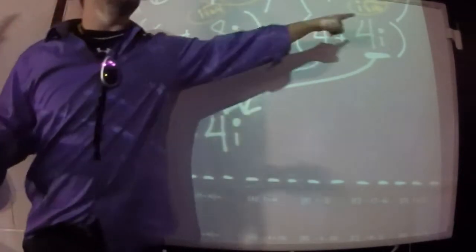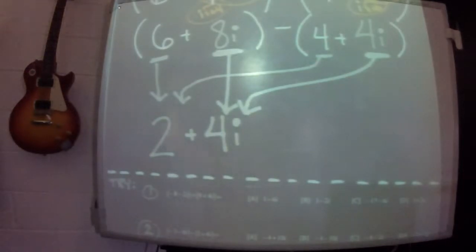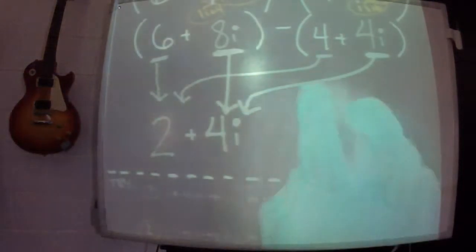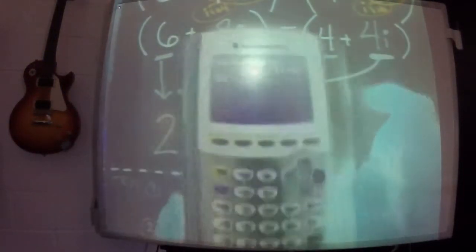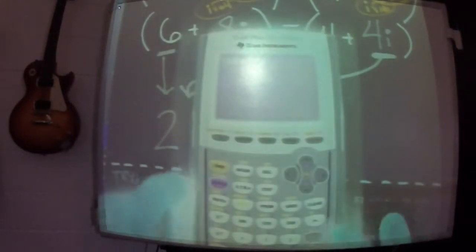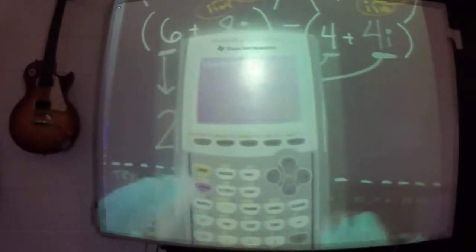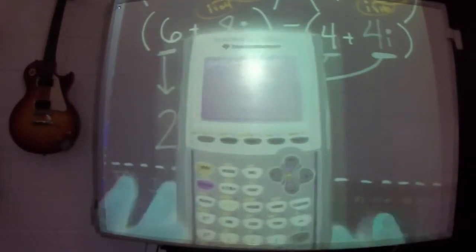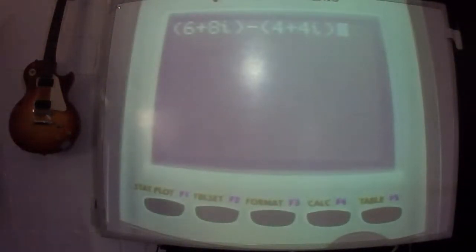Then one mistake you might make is if you said 8i plus 4i is 12i. You have to go 8i minus 4i. Remember, when you're subtracting, you have to subtract this and this. But you can always, if you're not confident, use your tool.